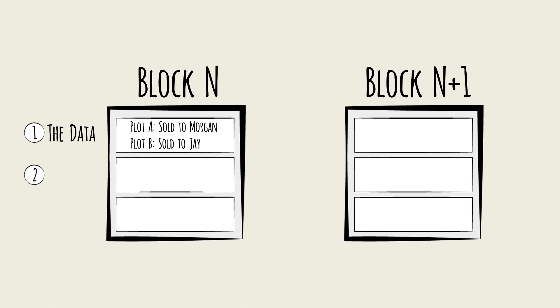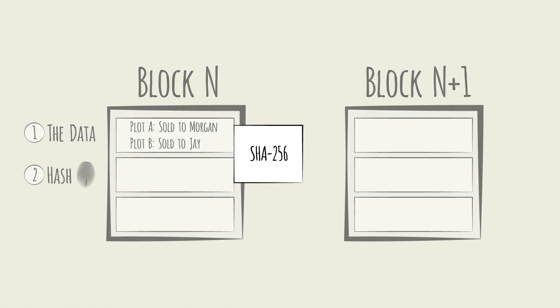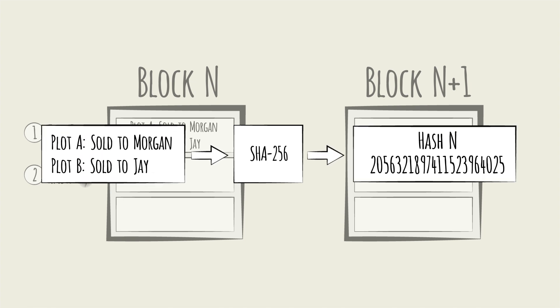Two, the second piece of information is a conversion of that data into a unique identifier called the hash. This is like the block's fingerprint. A cryptographic method such as SHA-256 generates the unique hash based on the underlying data in the block.